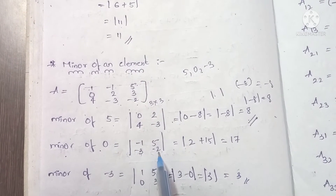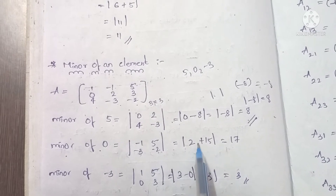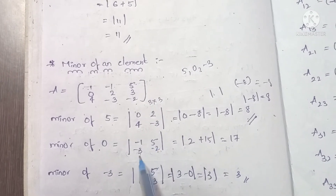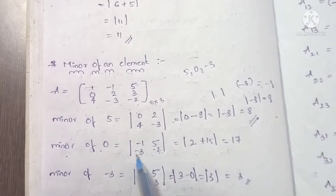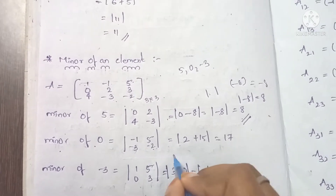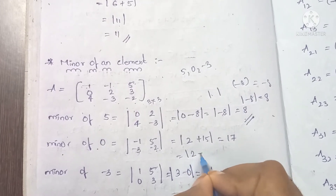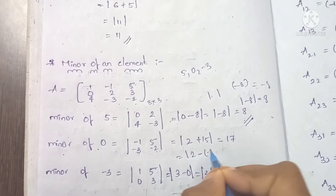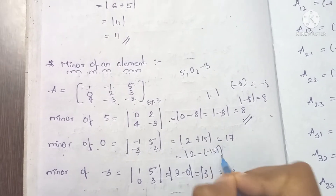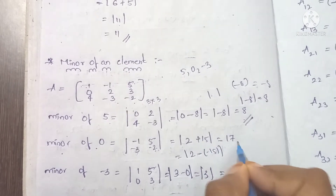Computing the minor of 0: ad minus bc equals (-1)×(-2) minus 5×3 equals 2 minus 15 equals -13. Wait, correcting: (-1)×(-2) = 2, and minus 5×3 = -15. So 2 + 15 = 17. Therefore the minor of 0 is 17.